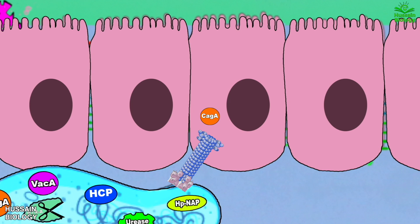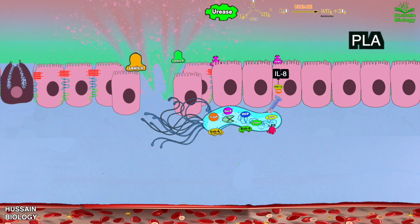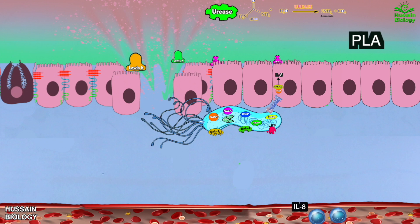Within the cell, CagA gets phosphorylated and drives the RAS-ERK pathway by activating the ERK1/2 molecule, which ultimately leads to production of interleukin-8. This interleukin-8 induces inflammation and also mediates the recruitment of leukocytes towards the target cells, as shown in the animation.